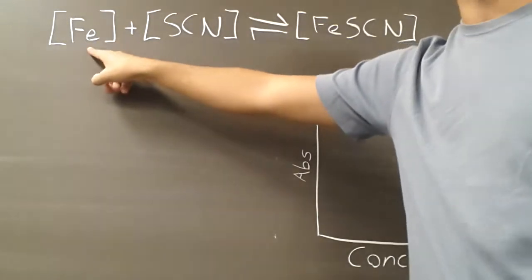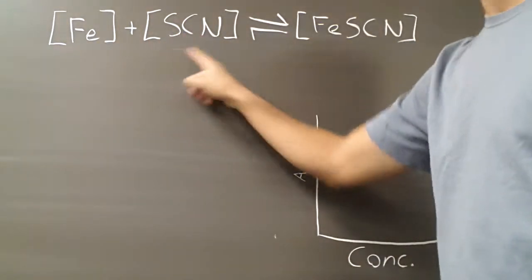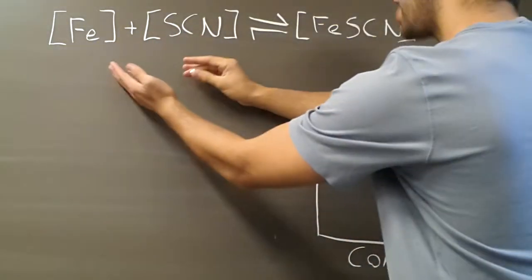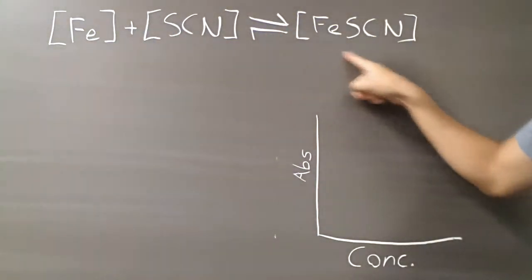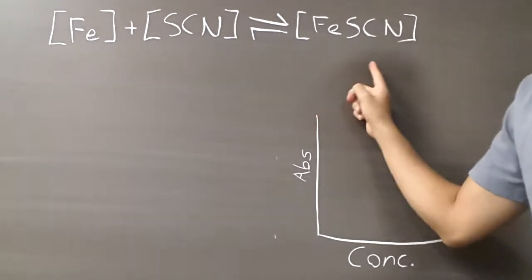Now, we have very little iron and a ton of thiocyanate, so this is going to push the reaction to the right, which means that any iron that we started with is going to be how much iron thiocyanate we have.